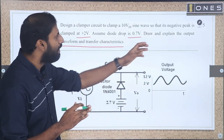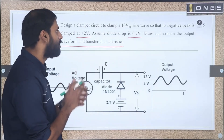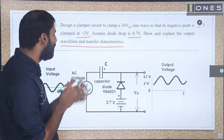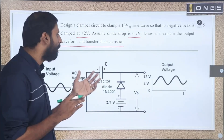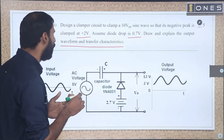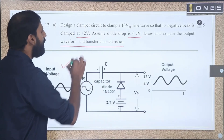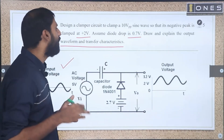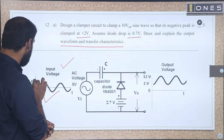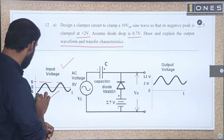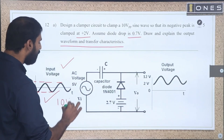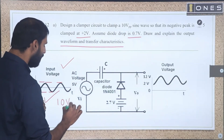This is a biased clamper. These are the standard requirements and data that we need. A 10 volt peak-to-peak signal is applied, so the input signal is 10 volt peak-to-peak. The positive peak is 5 volts and the negative peak is minus 5 volts — this is a 10 volt peak-to-peak sine wave input.